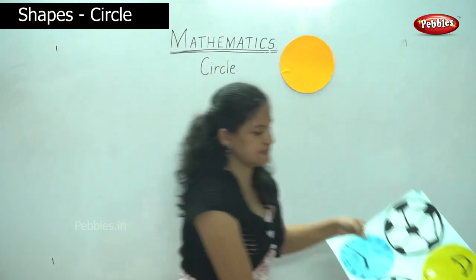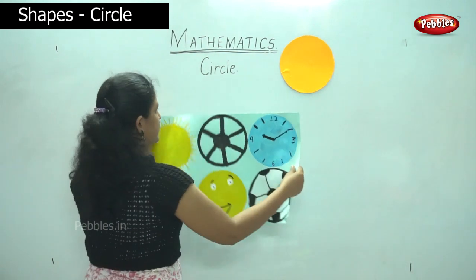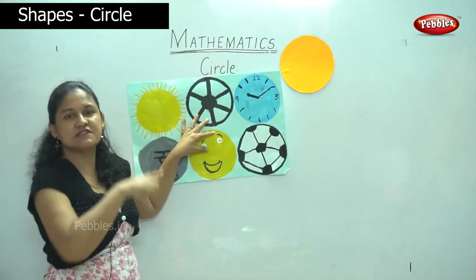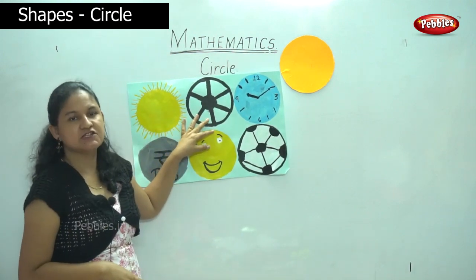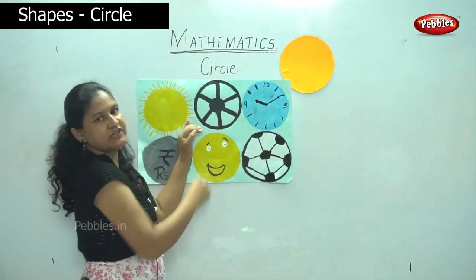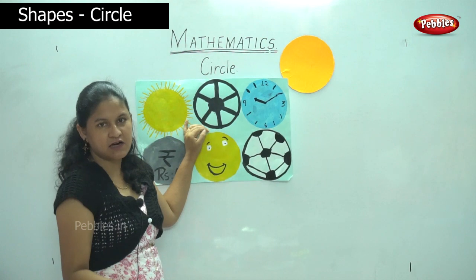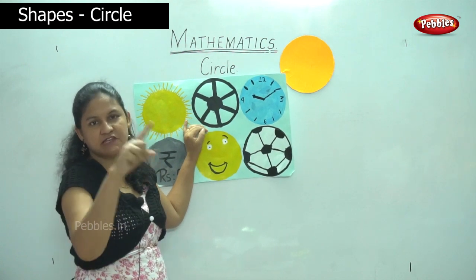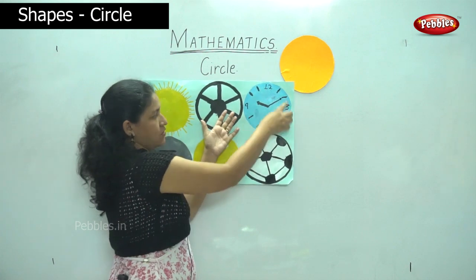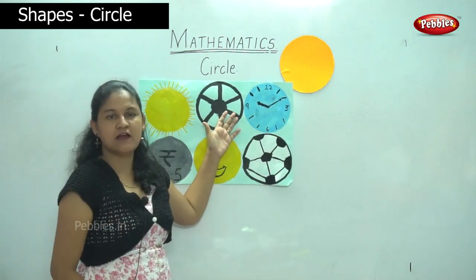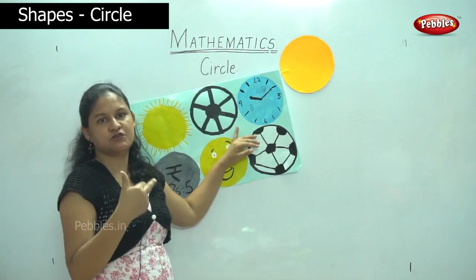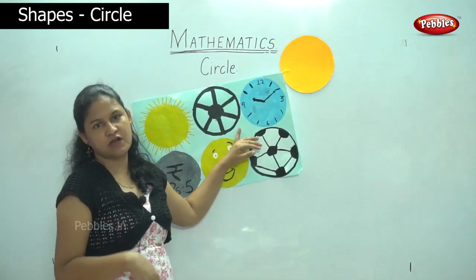We can see some examples of the circle. We have the sun, which is round in shape. The next is the wheel — the wheels of the bus, of the car, of the cycle — everything is round in shape. Then we have the clock in the house, the watch that you use, and the bangle that you use — all are round in shape.